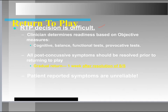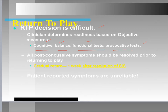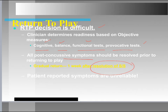When assessing return to play, criteria should include cognitive tests, balance tests, functional sports-specific tests, and provocative tests — things like stop-and-go or rotations that might cause an increase in neurological signs and symptoms. All post-concussive symptoms should be resolved prior to returning to play. The gold standard currently is to return an athlete when they've had resolution of signs and symptoms and have been symptom-free for a full week post-resolution.